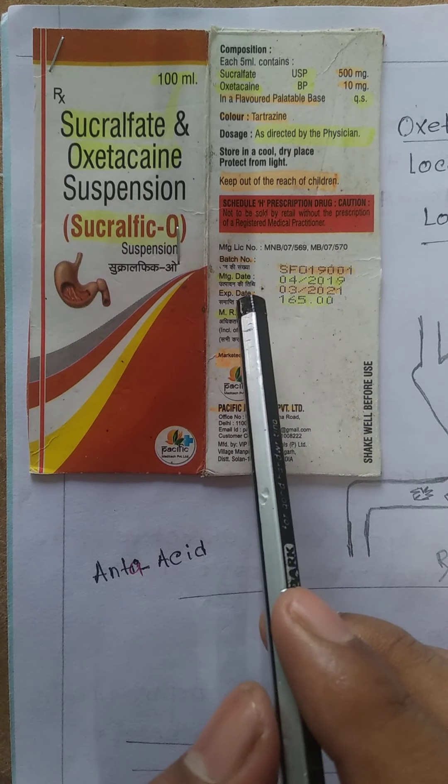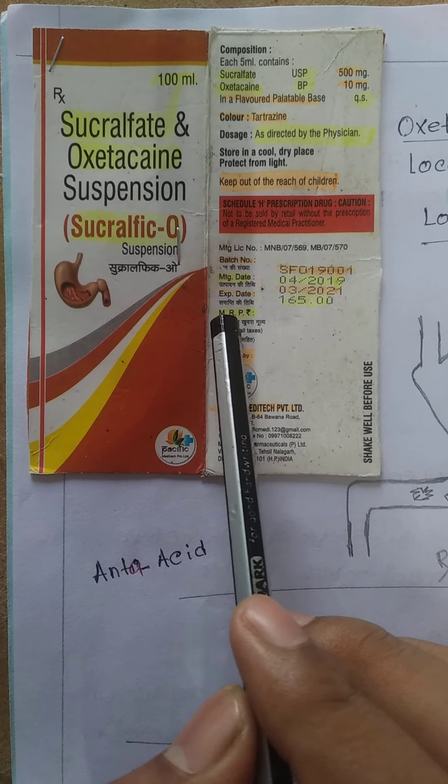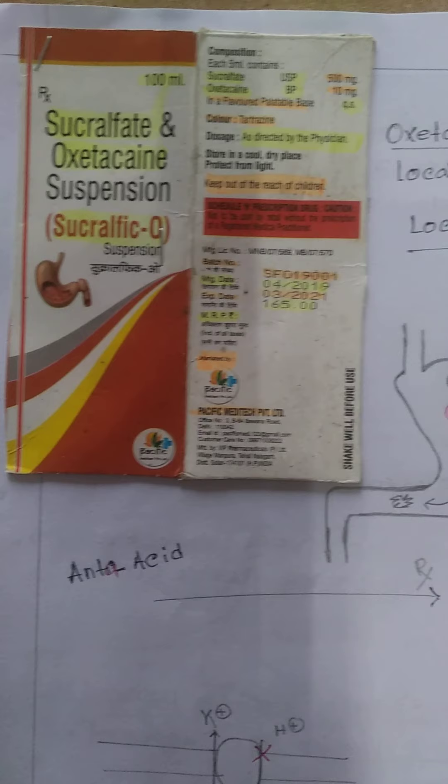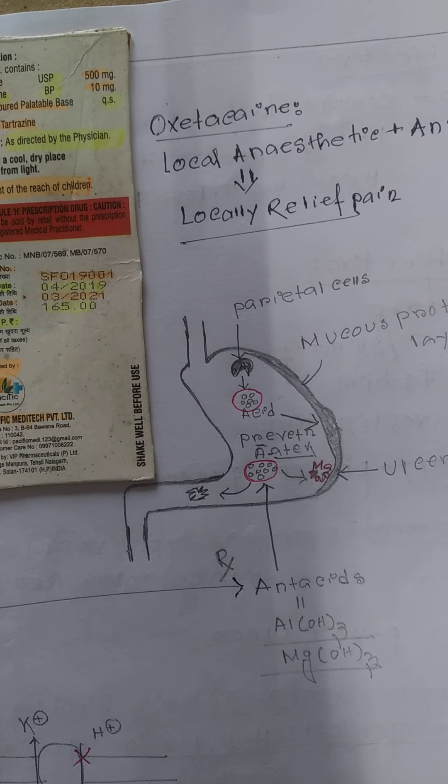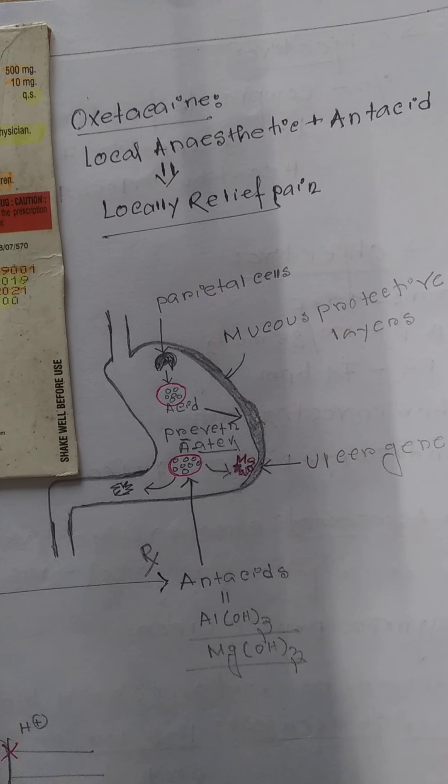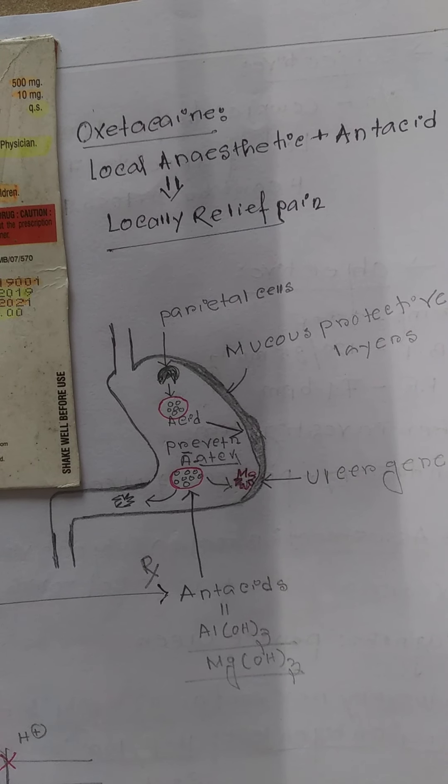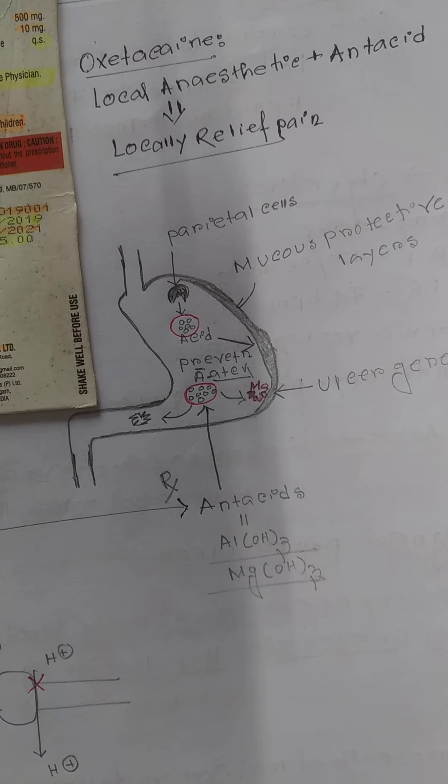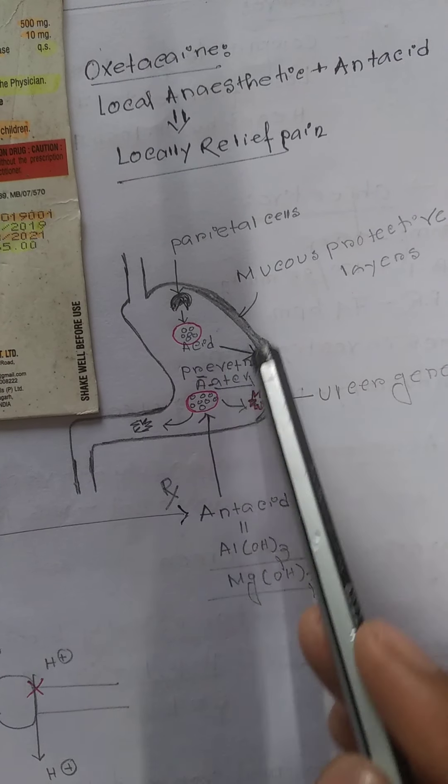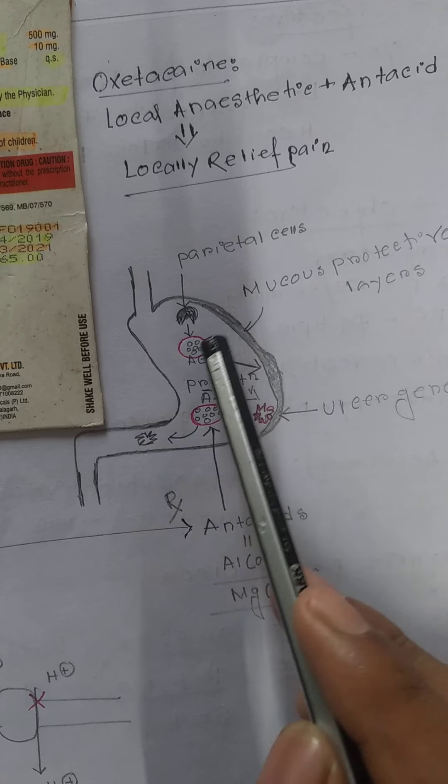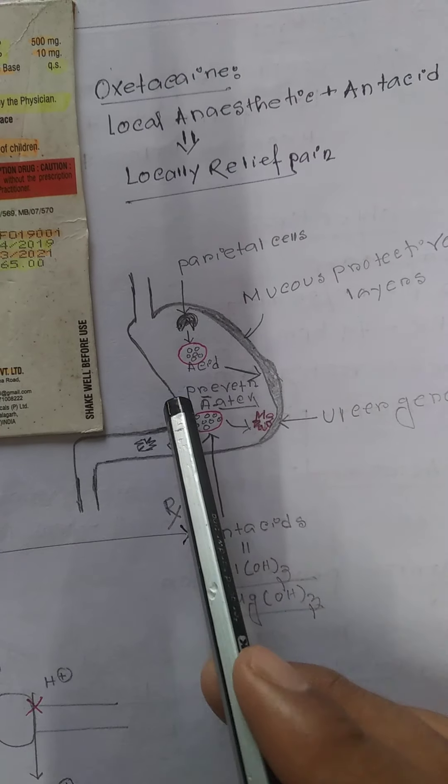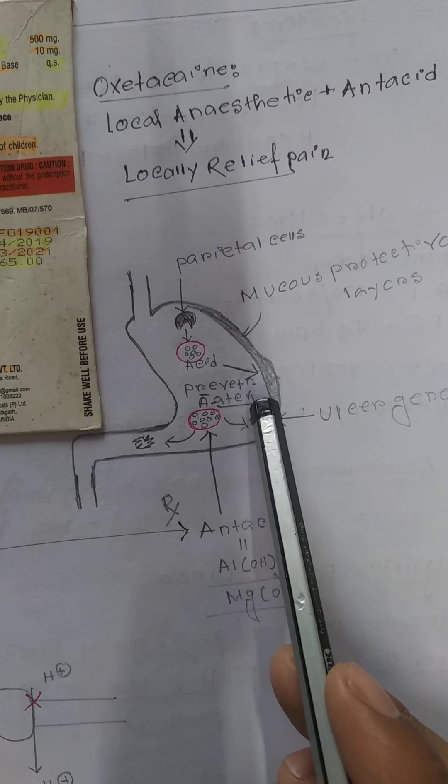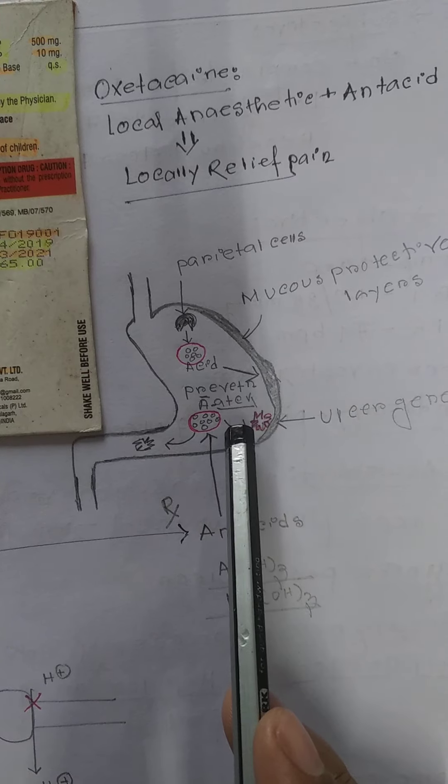This is mainly used for peptic ulcer. To understand this, normally HCL is secreted from parietal cells. There is a mucus protective layer of the stomach. When excessive HCL, the hydrochloric acid, is secreted, it causes inflammation in that mucus layer.